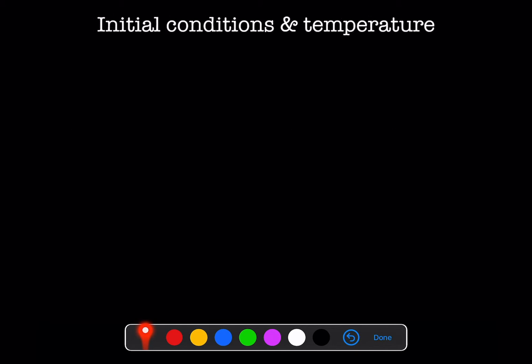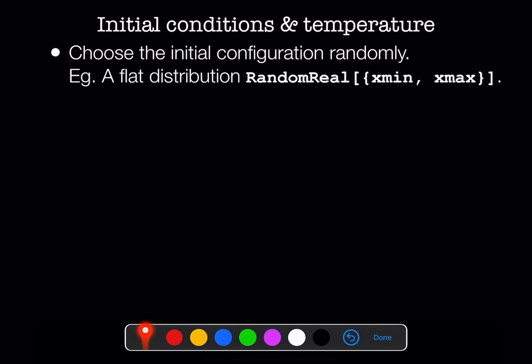When we're selecting the initial conditions, we would like to choose the initial configuration randomly. So imagine we have a simulation box that starts at x_min and ends at x_max. We can choose positions for particles according to a flat distribution, for instance, that would evenly disperse the particles throughout this domain.